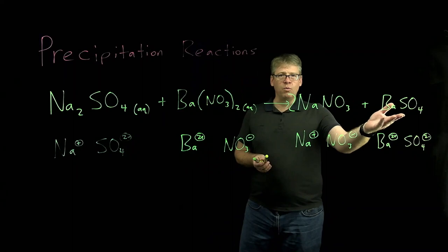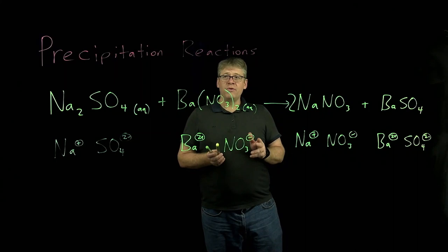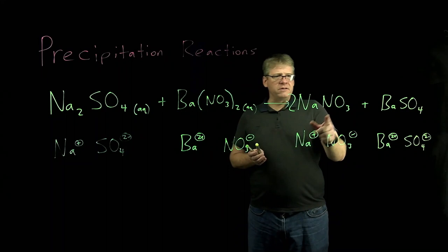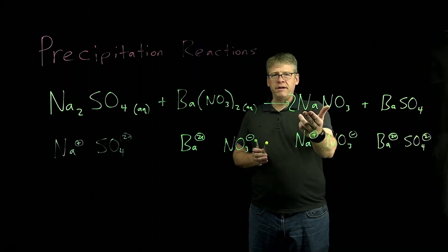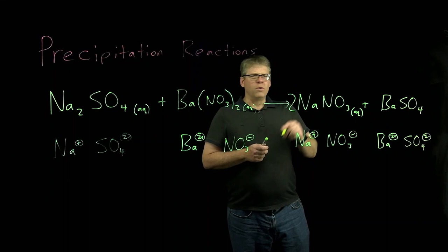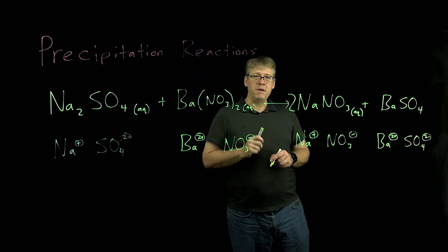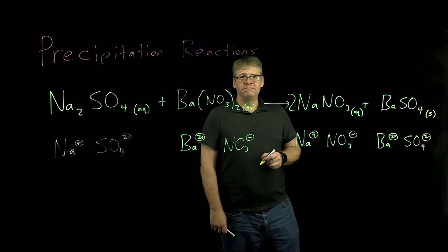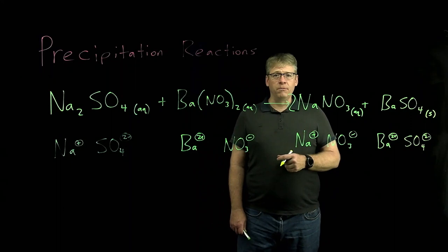Now for the moment of truth. Precipitation reactions will only work if two electrolyte water-soluble reactants give us at least one non-electrolyte product. Consulting our solubility table, sodium nitrate is water-soluble — it has an alkali group 1 metal cation and it's also a nitrate — so we label it aqueous. What about barium sulfate? Most sulfates are water-soluble, but barium sulfate is one of the few exceptions. Barium sulfate is not water-soluble; it will become a solid, which indicates it's a non-electrolyte. So this is a successful precipitation reaction.